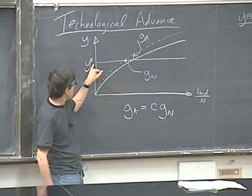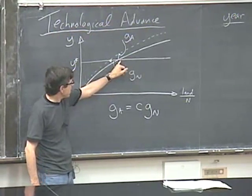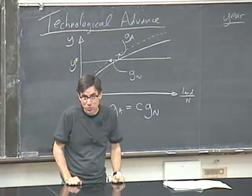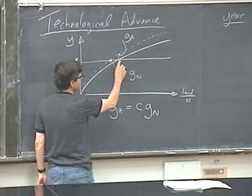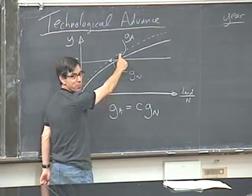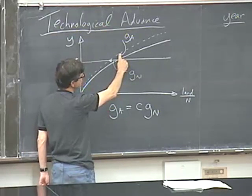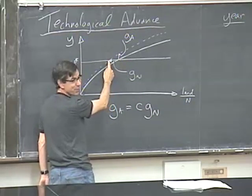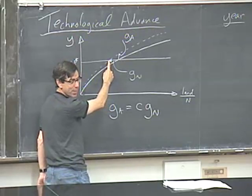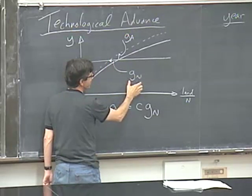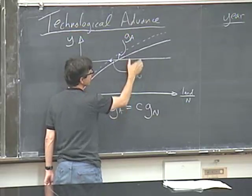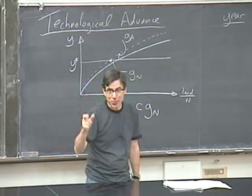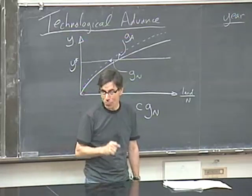It turns out we also end up with a very simple way of measuring technological advance when we have very little information about this world. The reason is that because of the Malthusian mechanism, all technological advance will ultimately result just in population growth in this pre-industrial world. While there will initially be an upward movement where people have higher incomes, eventually population will increase, land per person will decline, and we'll move back along the curve. So all we need is a way of measuring the connection between the efficiency shift and the population shift.